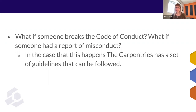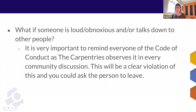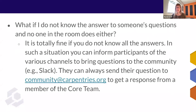It is helpful to add a link to the Code of Conduct in the chat so participants can easily reference it. But what if someone breaks the Code of Conduct and that violation has to be reported? There are detailed guidelines in the Carpentries Handbook on how reports should be submitted and how they will be handled once reported. If you have not yet fully read through the Code of Conduct, you are strongly encouraged to do so before leading a community discussion. What if someone is loud, obnoxious, and talks down to other people? This type of behavior would be in violation of the policy, and you could ask the person to leave. What if you do not know the answer to someone's question and no one in the room does either? It is totally fine — you can inform participants of the various channels to bring questions to the community, including Slack or the TopicBox listservs, or they can send their questions to community at carpentries.org to get a response from a member of the core team.